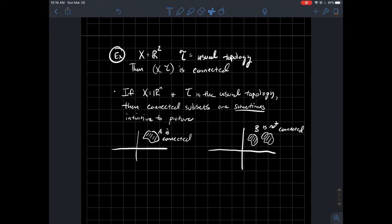...connected subsets, sometimes they're kind of intuitive to picture. So like on the left, that's a connected subset of the plane, right? In other words, it's just one piece. It's not separated. Whereas on the right, that B is both of those pieces. Well, B is not connected, right? Separated into two pieces. So sometimes connectedness can be a little bit intuitive.